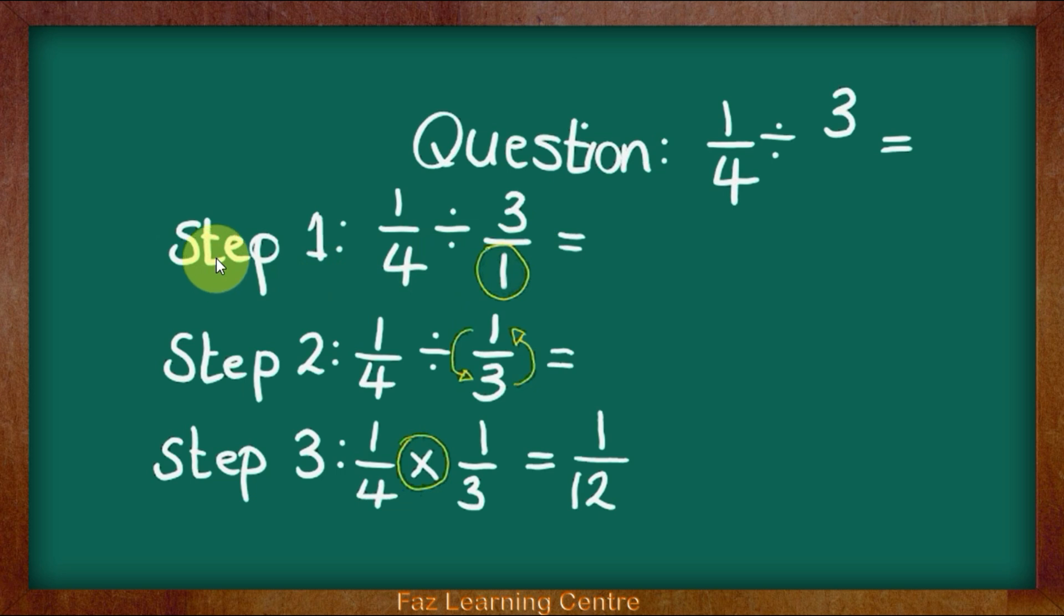We need to change the whole number into a fraction. 1/4 divided by 3 was the whole number. We have added a denominator at the bottom. So now I have 1/4 divided by 3/1.